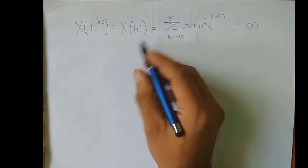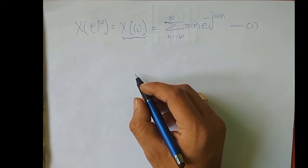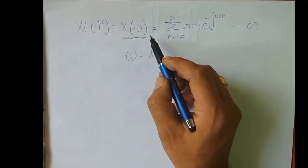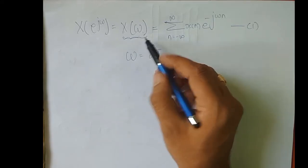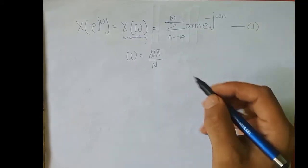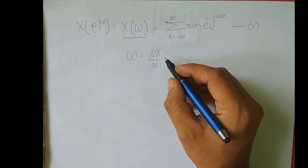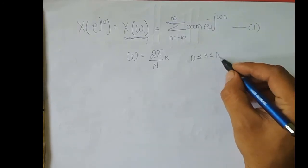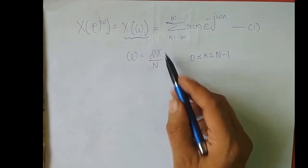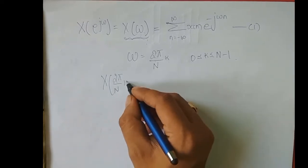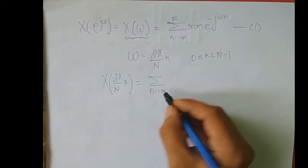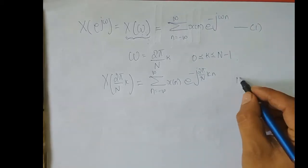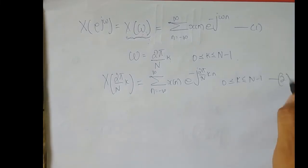What we did was, we sampled this frequency domain into N equidistant samples. Omega is equal to 2 pi divided by N — why 2 pi? Because x of omega is a periodic signal with fundamental period 2 pi. We took N samples, and we put one variable k to access the index, where k is an integer varying from 0 to N minus 1. If we substitute omega by 2 pi by N in the above equation, we get x of 2 pi by N into k equals summation n from minus infinity to infinity of x of n e power minus j 2 pi by N into k into n, where k varies from 0 to N minus 1. This was equation number 2.